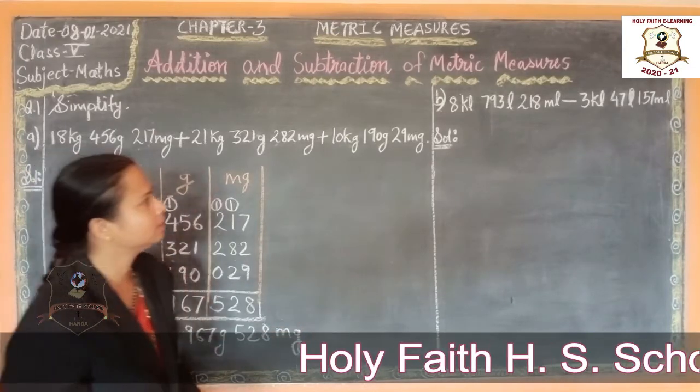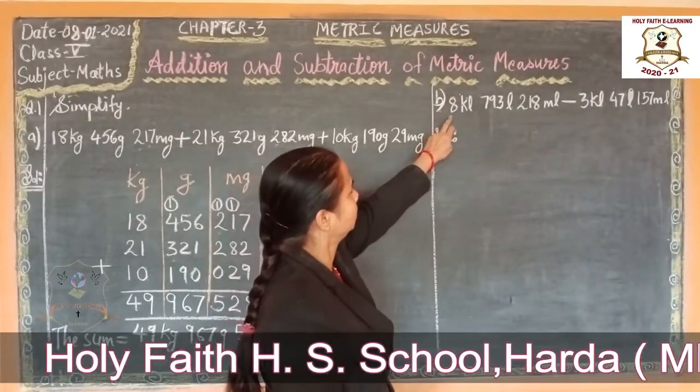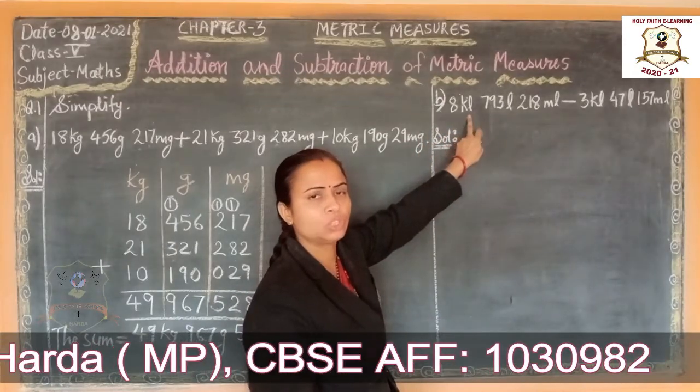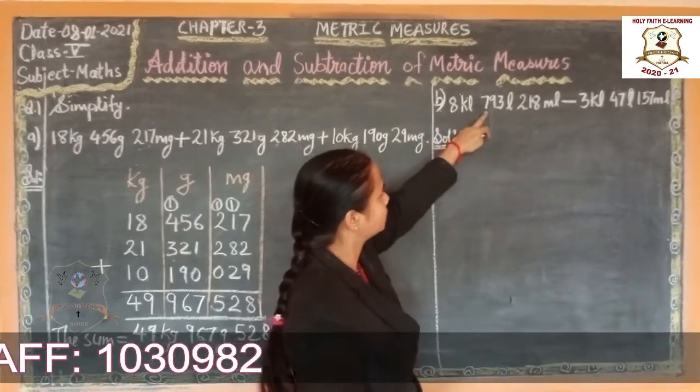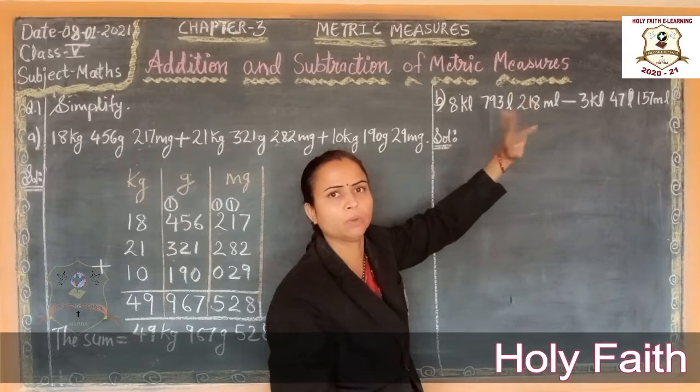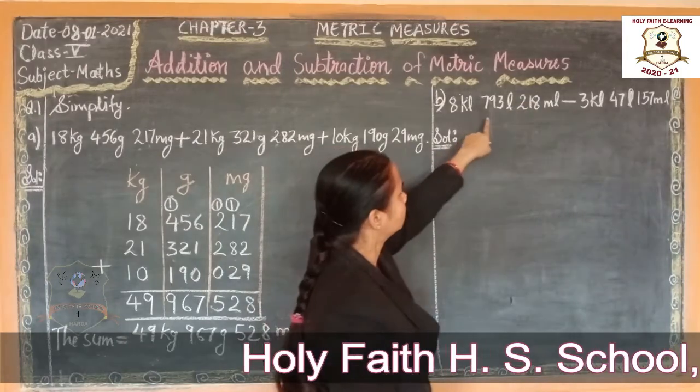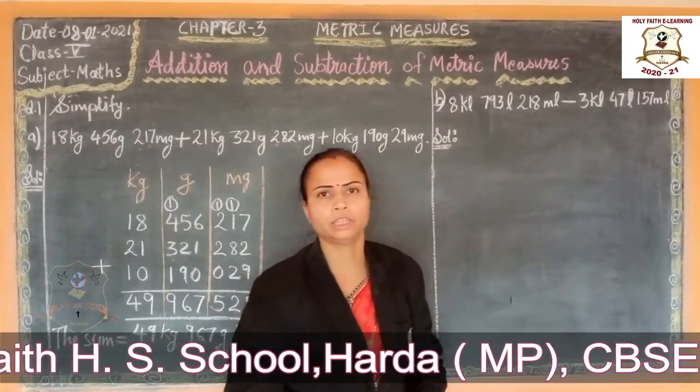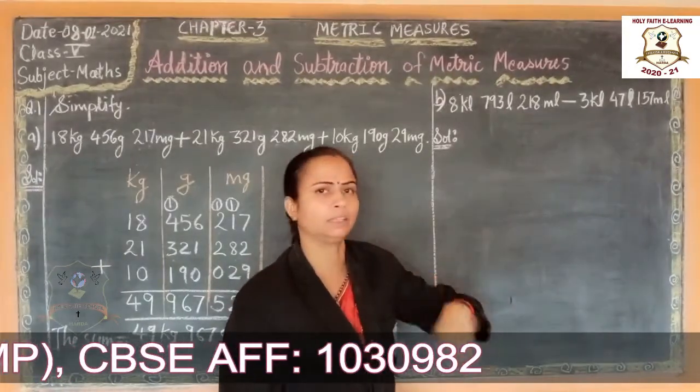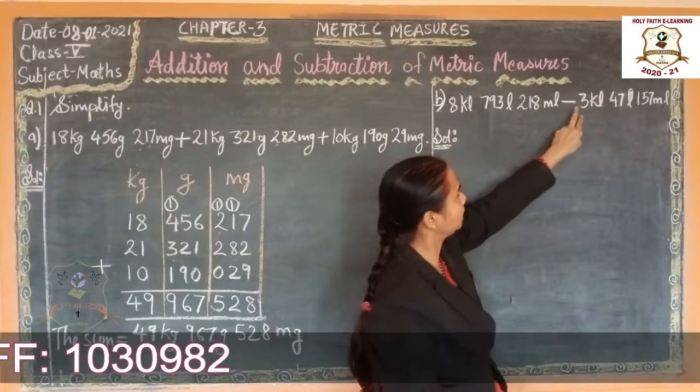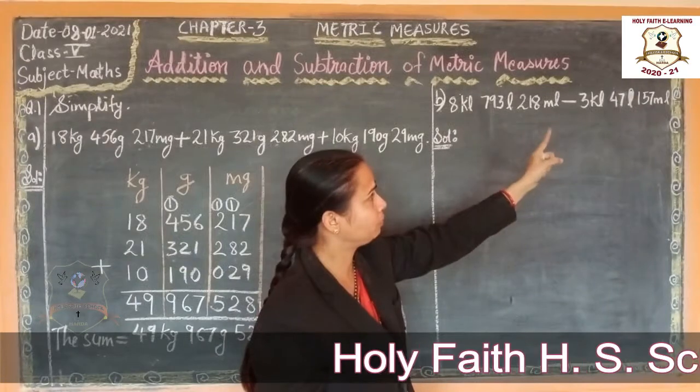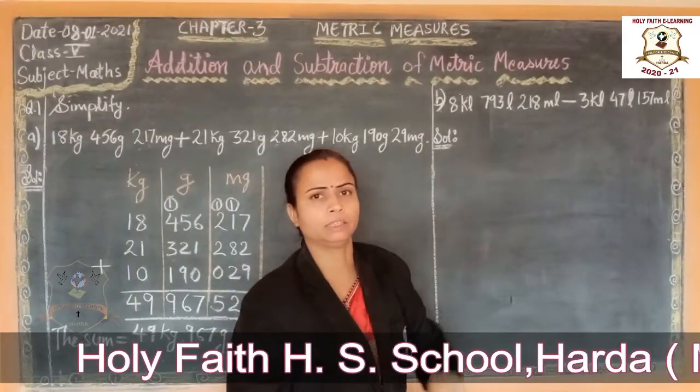Here see here. A. Kilolitre. K is short form of kilolitre. 793 litre. L is short form of litre. 793 litre, 280 millilitre. Millilitre is short form. M is short form of millilitre. Understood. Minus 1, 3 kilolitre, 47 litre, 1, 157 millilitre.